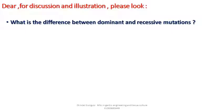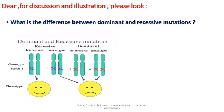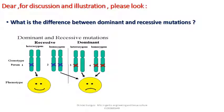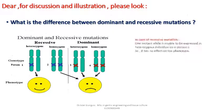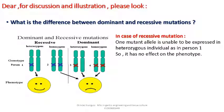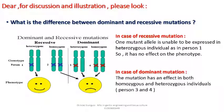What is the difference between dominant and recessive mutations? In the case of a recessive mutation, one mutant allele is unable to be expressed in a heterozygous individual, so it has no effect on the phenotype. In the case of a dominant mutation, the mutation has an effect in both homozygous and heterozygous individuals, persons 3 and 4.